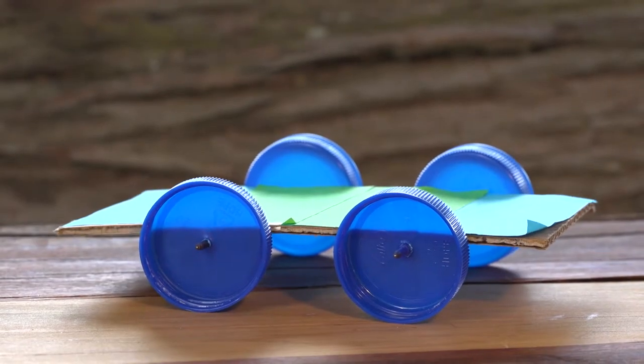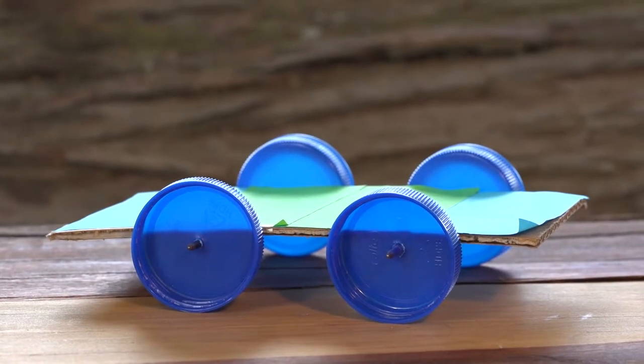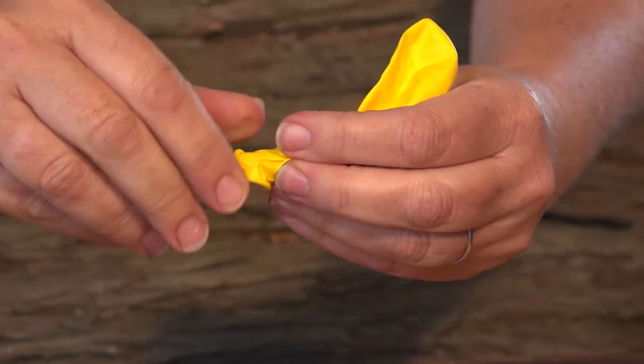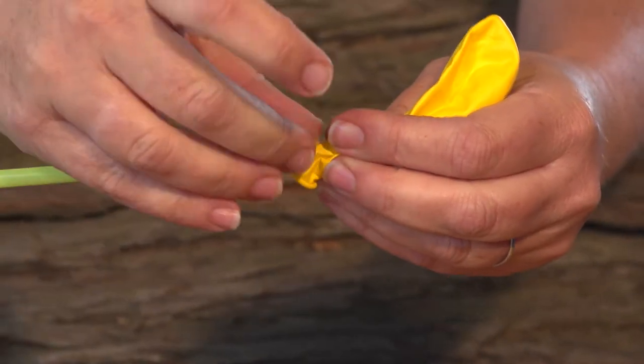There's our vehicle. Now, to add the balloon, take your third straw and wrap the balloon end on it. Then, secure it in place with sellotape.